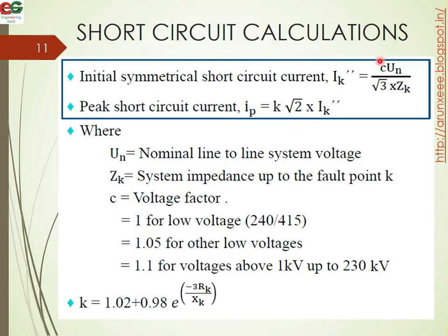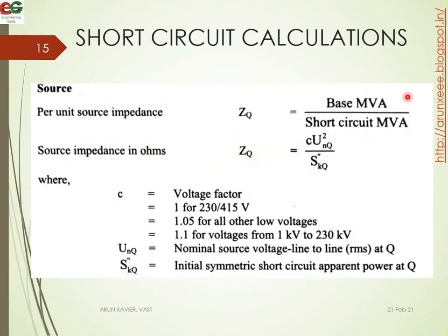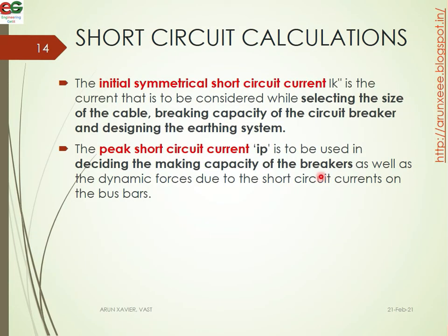IK double dash equals C multiplied by UN divided by root 3 multiplied by ZK. The peak short circuit current IP is used when deciding the making capacity of breakers and assessing the dynamic forces due to the short circuit current on the busbars.